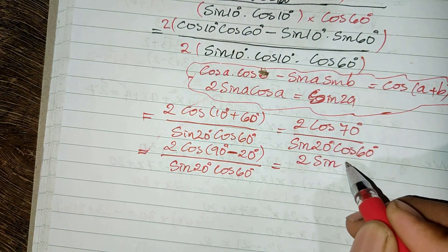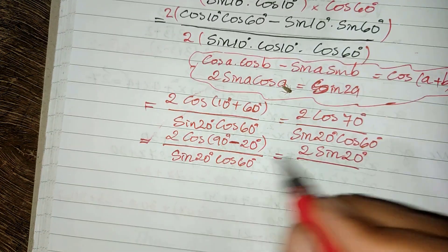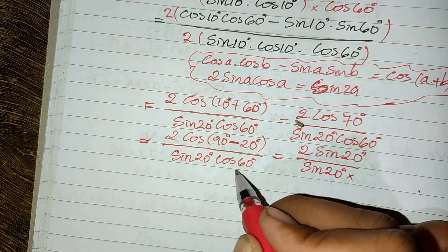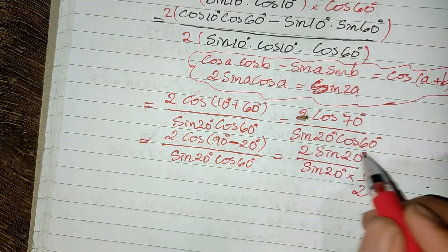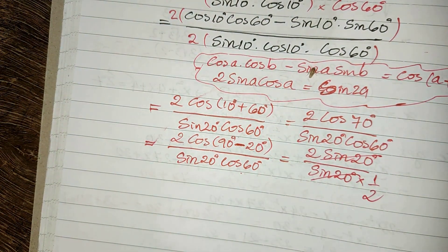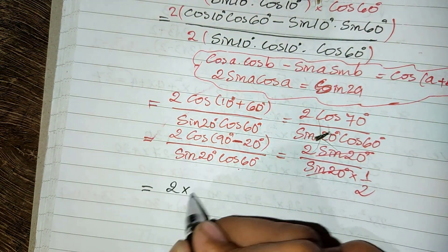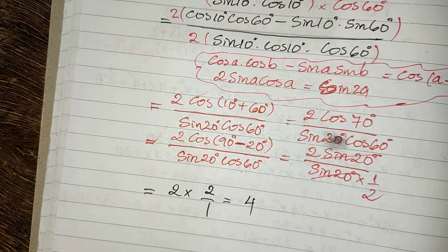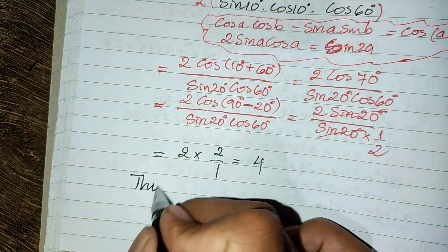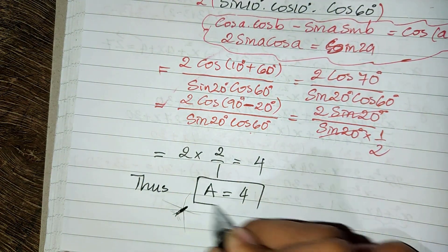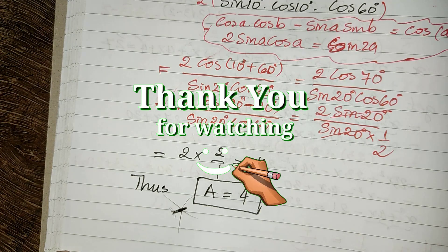So we get 2 sine of 20 degrees divided by sine of 20 degrees, multiplied by 1 over 2, which equals 1 divided by 2. We simplify this: 2 multiplied by 2 divided by 1 equals 4. So the value of expression A equals 4. That is our solution. If you like my videos, please don't forget to subscribe to my channel for more exciting videos. Goodbye, see you in the next video.